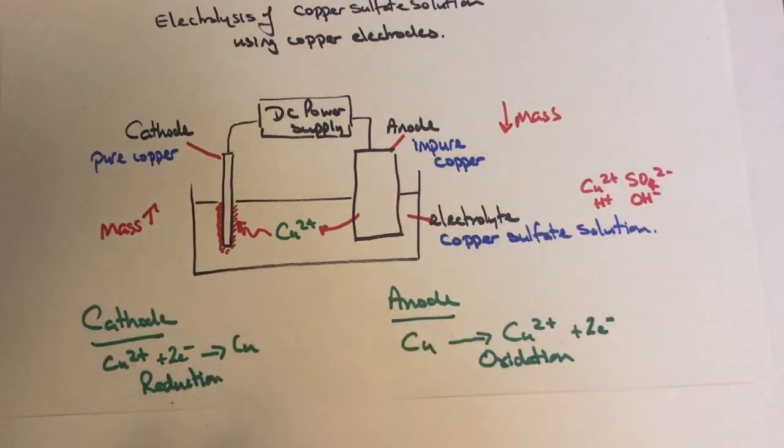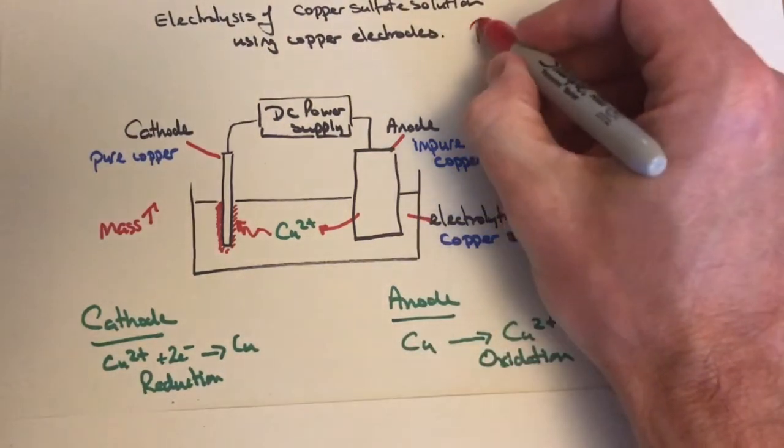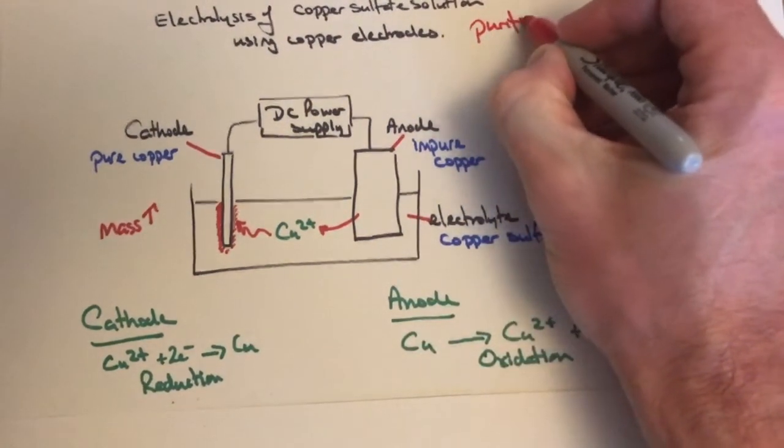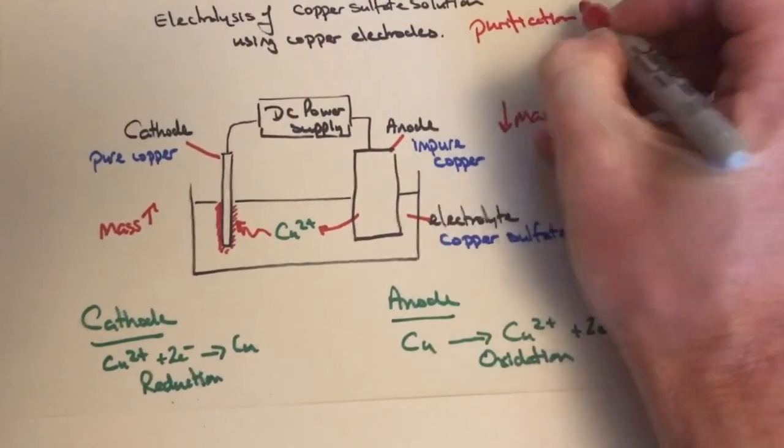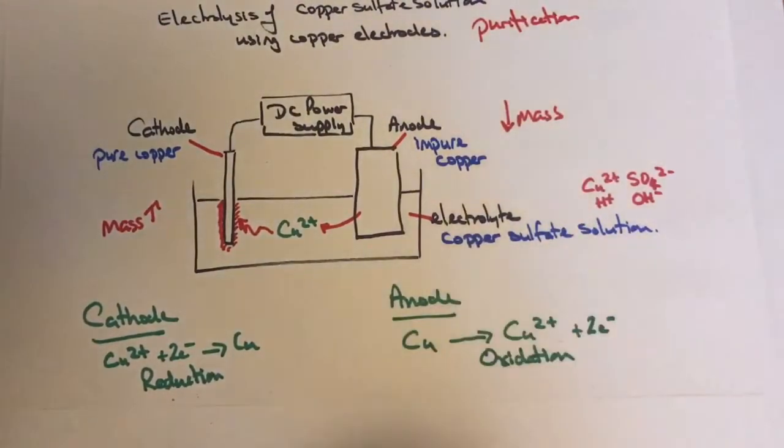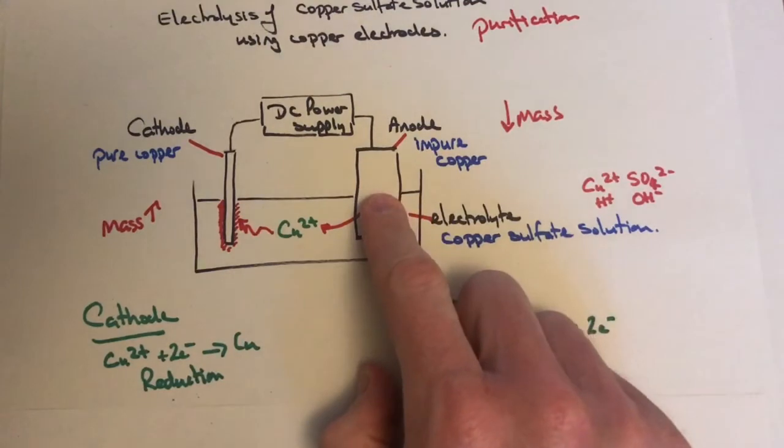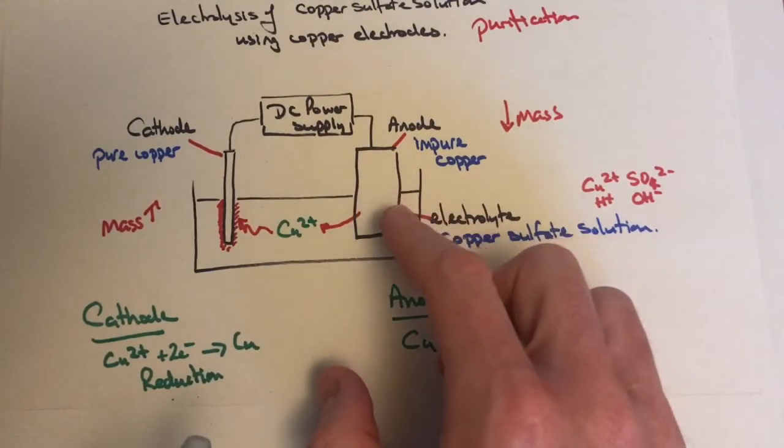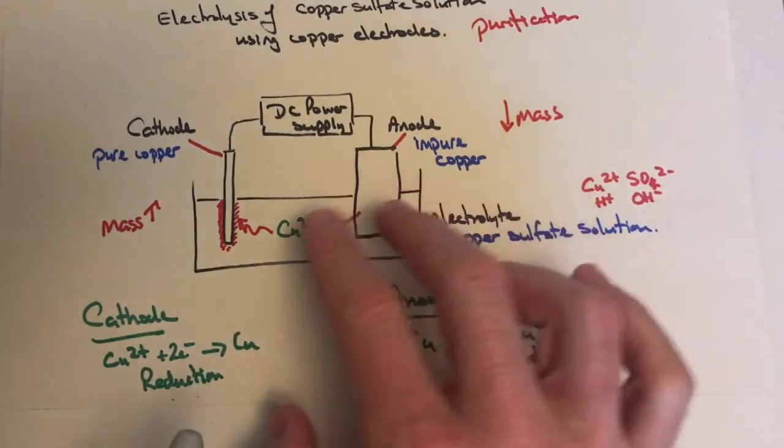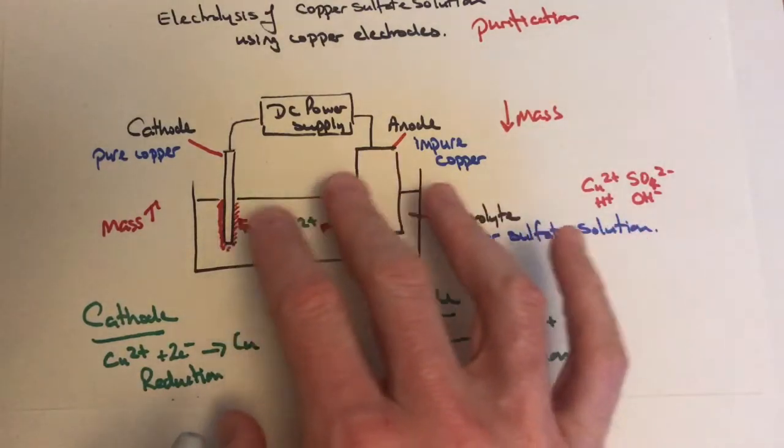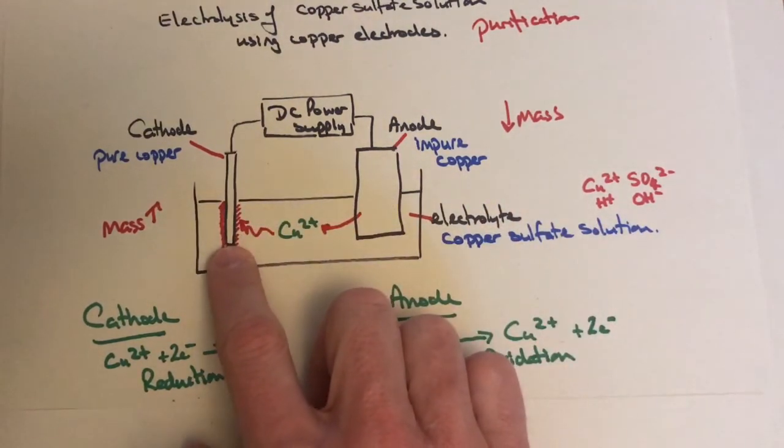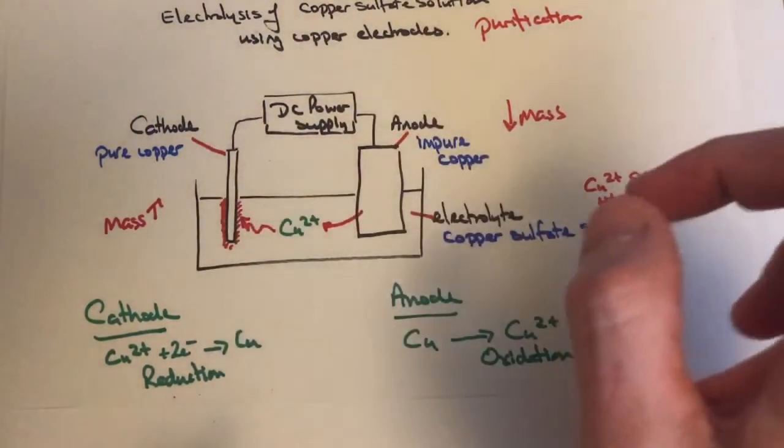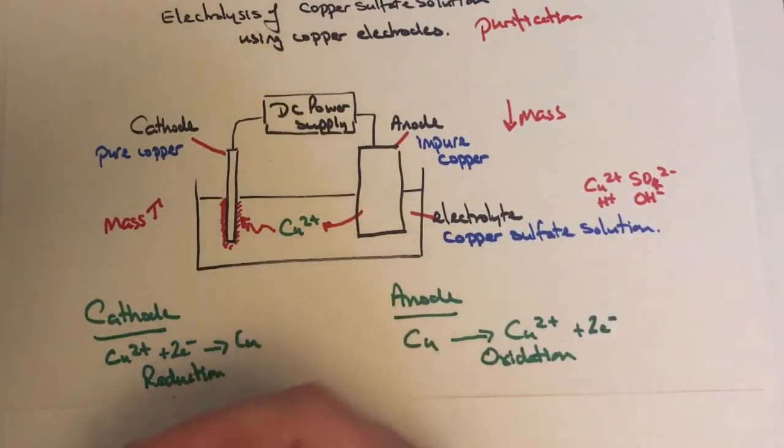This process is very interesting because it's about the purification of copper. If we have impure copper that's not very useful, we can carry out electrolysis and end up with pure copper, which can be used to make copper wires.